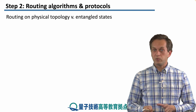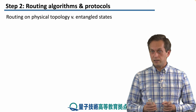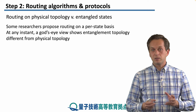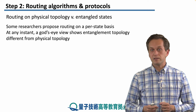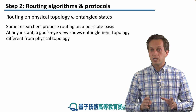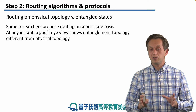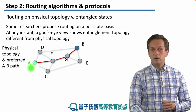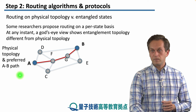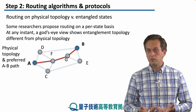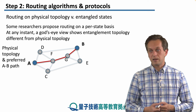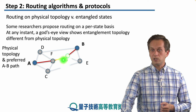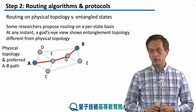There is also an important difference between physical topology and entangled states, which is very relevant to routing. Some researchers propose routing on a per-state basis — meaning that at any instant, a God's-eye view shows an entanglement topology different from the physical topology. For example, for a connection between A and B, we might expect link-level entanglement along path A–F–G–B, performing entanglement swapping accordingly.